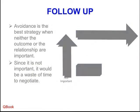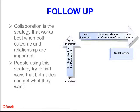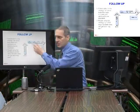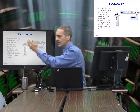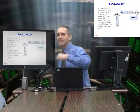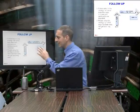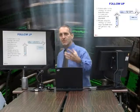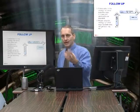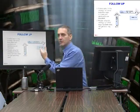The final strategy is collaboration. Collaboration means we try to work together. In this quadrant, the relationship is very important AND the outcome is very important. I need a good deal now and I need a good long-term relationship with my counterpart. So I collaborate — I give some things, I ask for some things, I try to get them to give me what I want while giving them what they want. Hopefully both sides can get what they want, and that is collaboration.